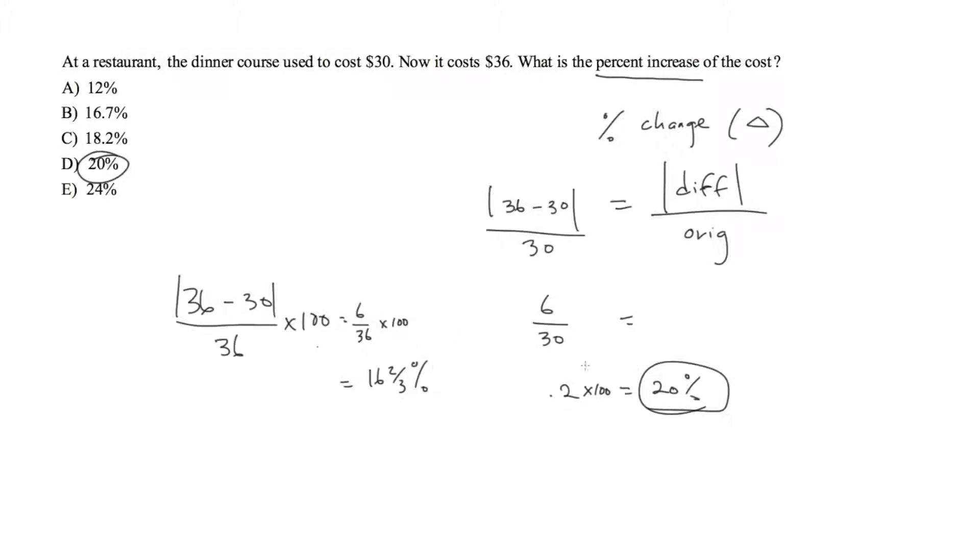The only thing you have to really be careful for is the original. In this case, for the original question here on the right side, we have the original value being $30, which is the lesser cost. Now it's more expensive at $36. In my separate example, I'm saying that the original dinner cost $36.